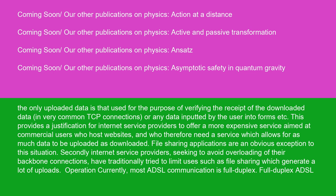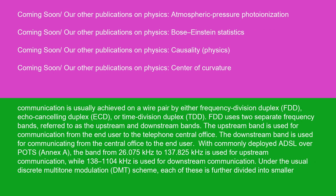Secondly, internet service providers, seeking to avoid overloading of their backbone connections, have traditionally tried to limit uses such as file sharing which generate a lot of uploads. Regarding operation, most ADSL communication is full duplex. Full duplex ADSL communication is usually achieved on a wire pair by either frequency division duplex, FDD, echo cancelling duplex, ECD, or time division duplex, TDD. FDD uses two separate frequency bands referred to as the upstream and downstream bands. The upstream band is used for communication from the end user to the telephone central office, and the downstream band is used for communicating from the central office to the end user.